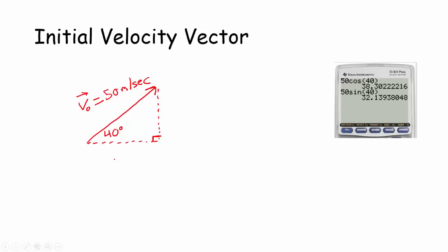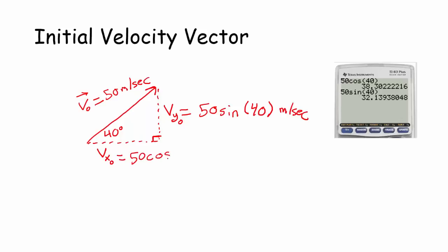We can do some basic right triangle trigonometry. We want to figure out the initial x-direction velocity and the initial y-direction velocity. We can write: sine of 40 equals v_y0 over 50. Multiplying both sides by 50, we get that v_y0 is 50 sine of 40 degrees meters per second, and v_x0, the initial velocity in the x direction, will be 50 cosine of 40 degrees meters per second.